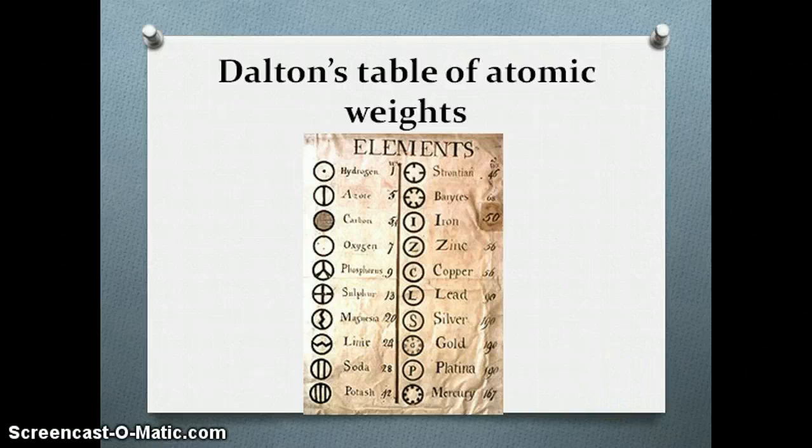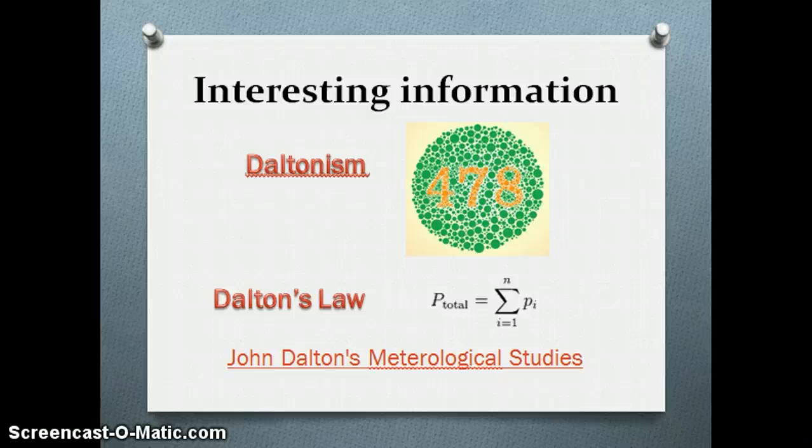Now for some interesting facts about John Dalton. John Dalton was colorblind, and that's why this deficiency has been named Daltonism. If you are colorblind, you will probably not see the numbers 4, 7, and 8 in the color-circle shown here — that's an inability to see color differences.